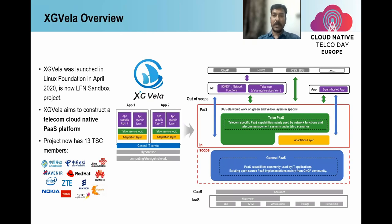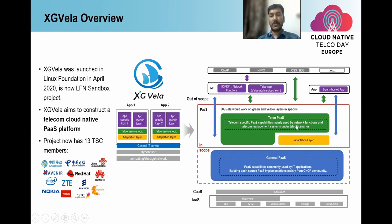XG Vela is a project which started in April 2020. It has been adopted as a sandbox project with LF Networking in January 2021. Currently, we have 30 TSC members working on XG Vela participating in different functional aspects. If you see the architecture of XG Vela, it mainly constitutes extensions to the PaaS platform. The general PaaS, shown in the blue box, is what we all know. XG Vela's scope is mainly the red dotted line and red scope. The key scope is the solid red line, which constitutes two main parts: one is the adaptation layer — an extension to the general PaaS that adapts to specific telco needs — and the other is the functionality to be implemented as a telco-specific layer.